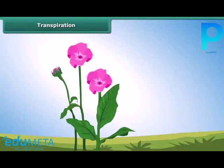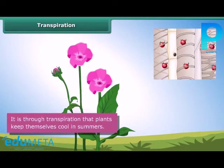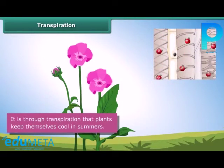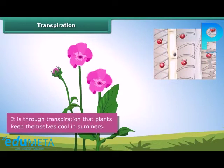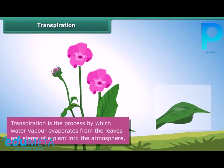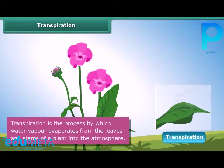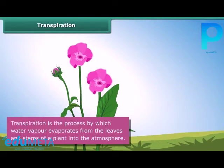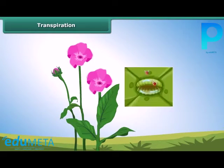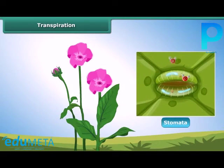An important function of the leaf is to keep the plant cool in summers. This is accomplished through transpiration. Transpiration is the process by which water vapor evaporates from the leaves and stems of a plant into the atmosphere. Small pores called stomata on the underside of the leaves facilitate transpiration.